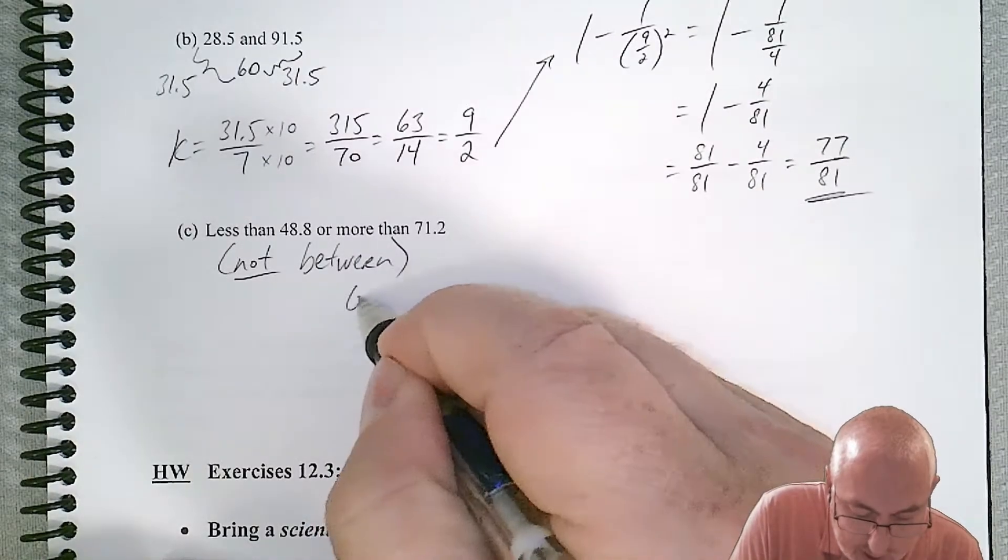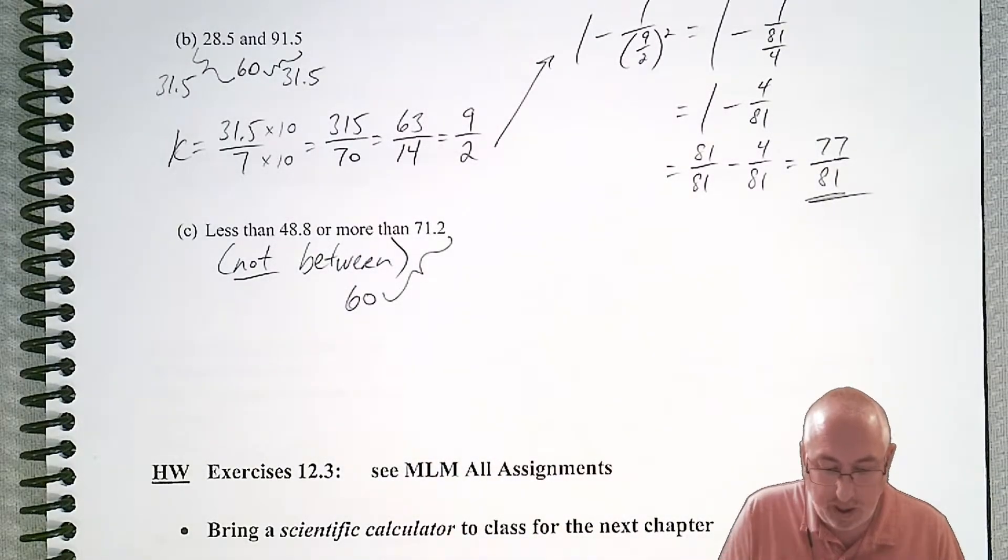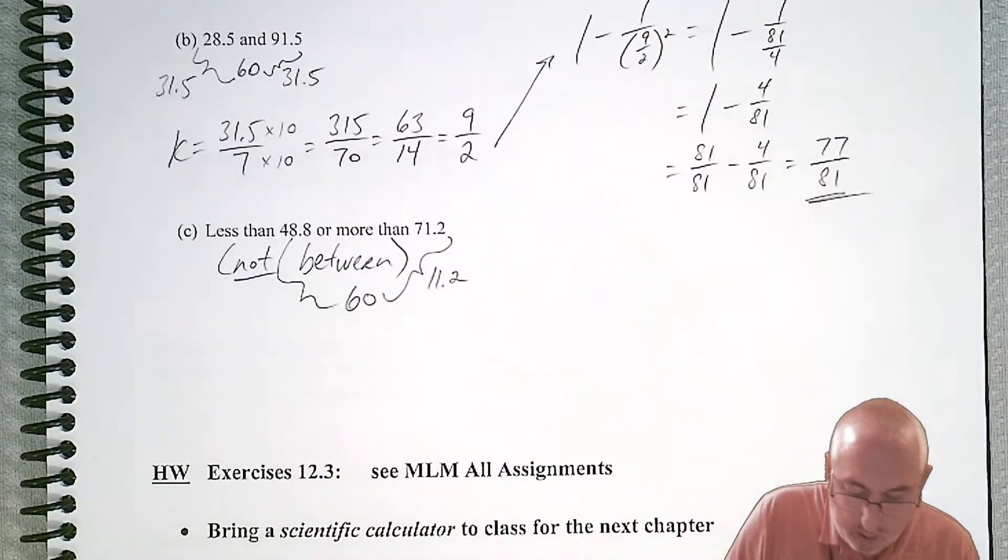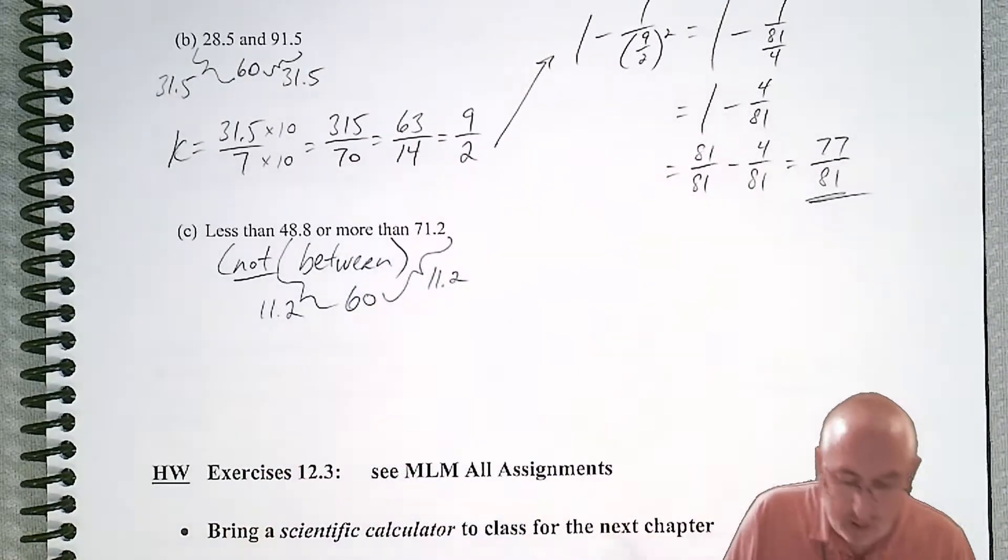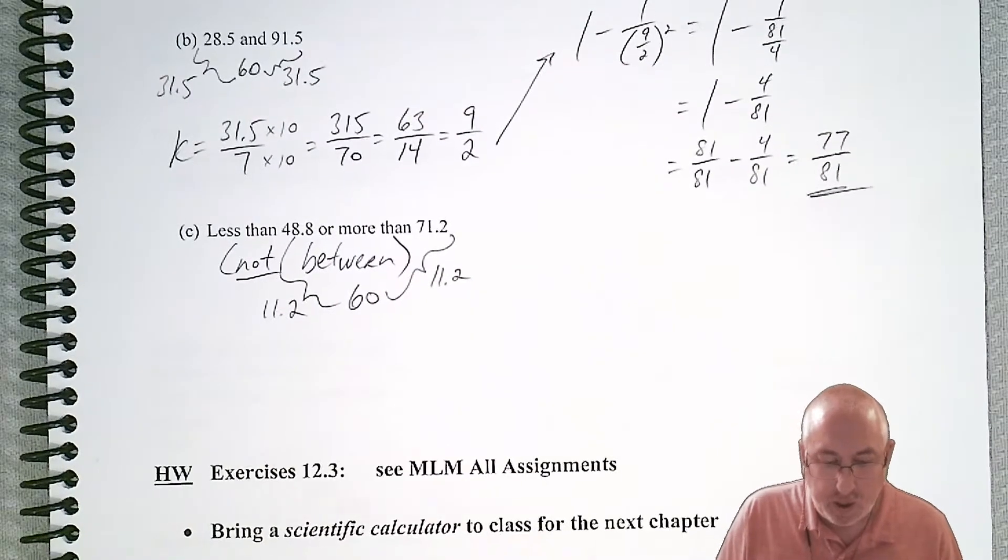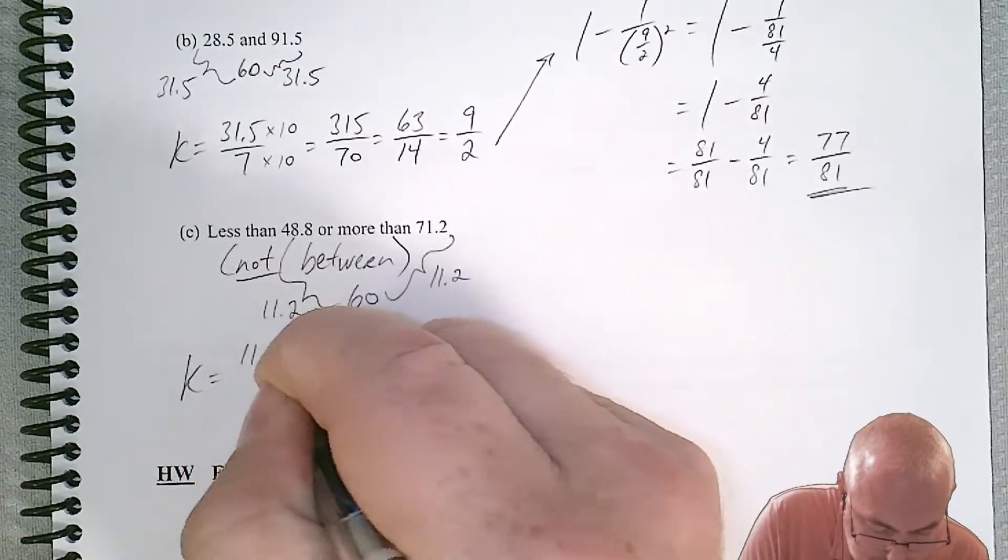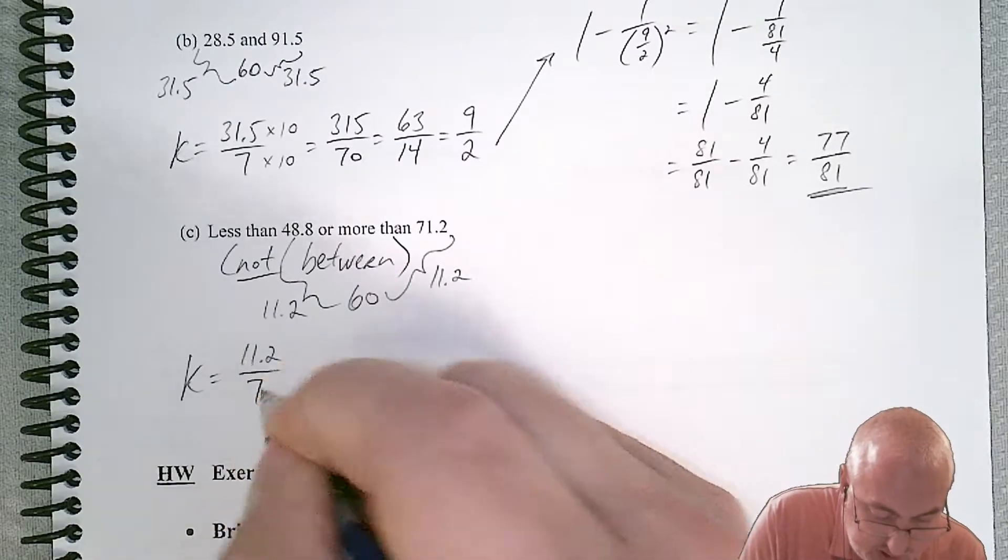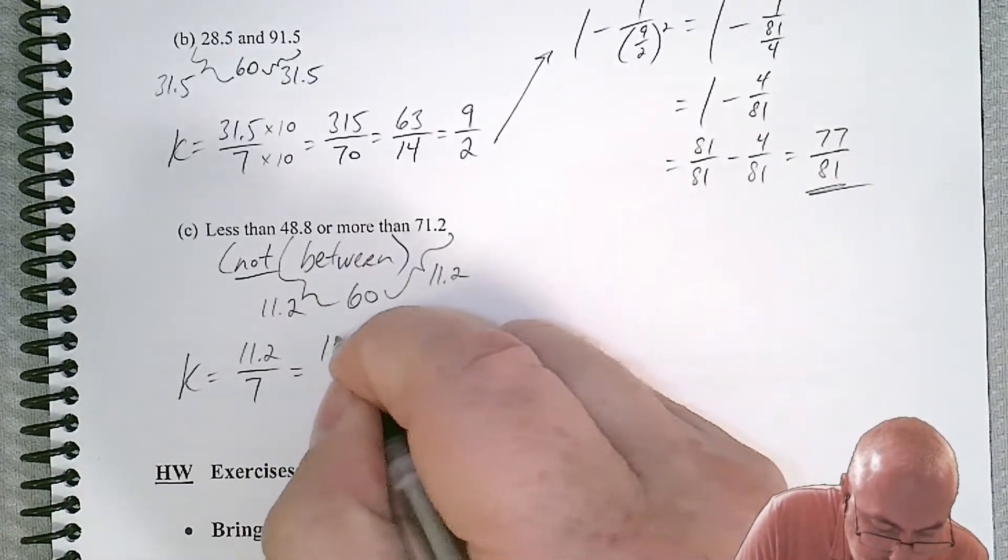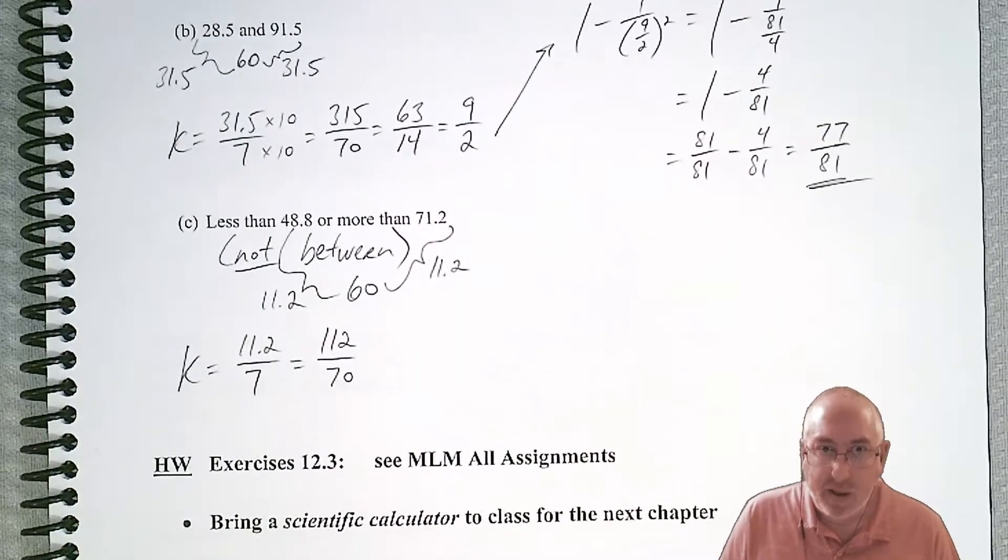So remember, 60 should be in the middle. So if we do our subtraction again here, what do we get? Looks like 11.2. And over here, we can see that it's the same, 11.2. I'm not showing the math, but you can verify it using your calculator. So 11.2 is that difference from the mean. So we know that goes on top. And the standard deviation is still 7. So we've got to do the same thing we did above. We've got to multiply by 10. So 112 over 70.